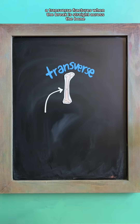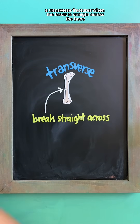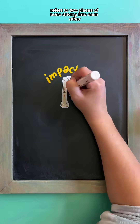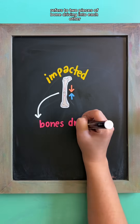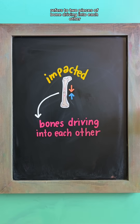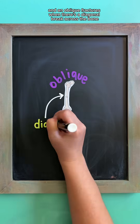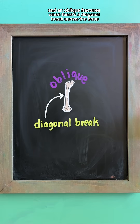A transverse fracture is when the break is straight across the bone. An impacted fracture refers to two pieces of bone driving into each other. And an oblique fracture is when there's a diagonal break across the bone.